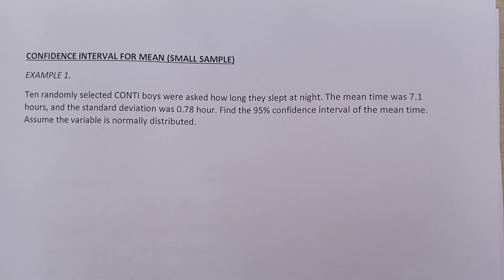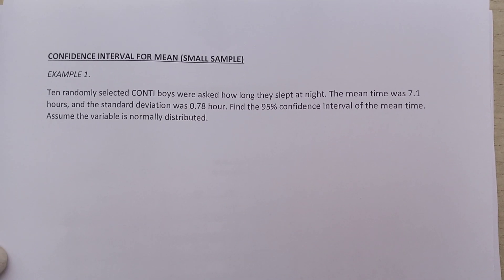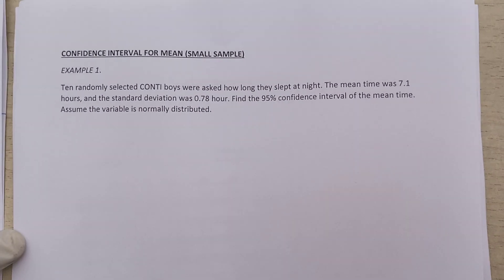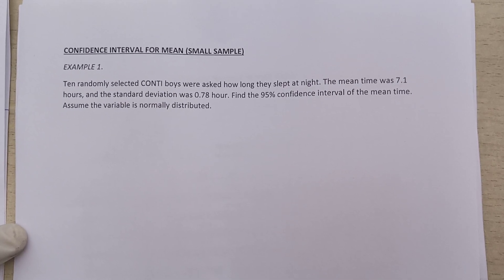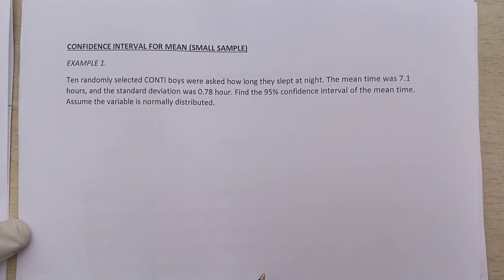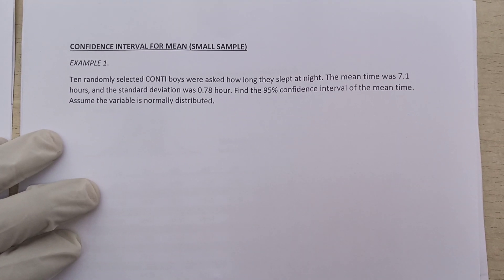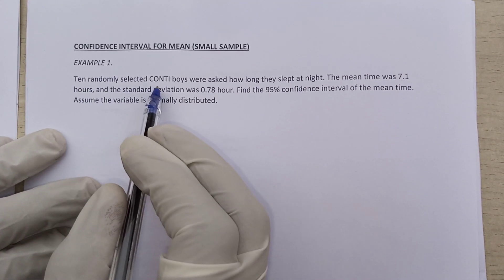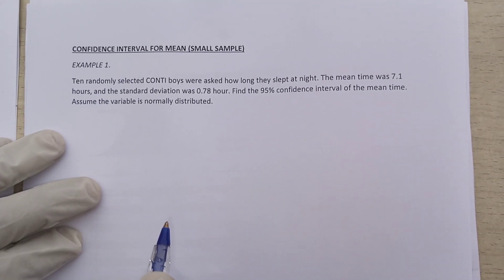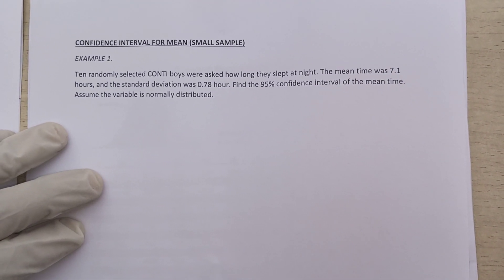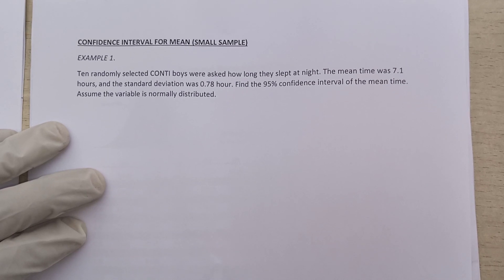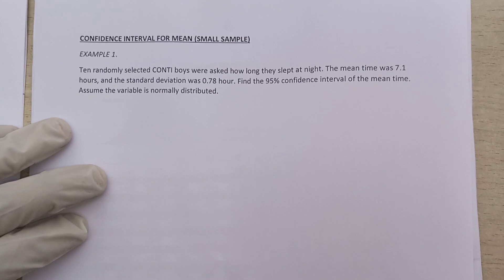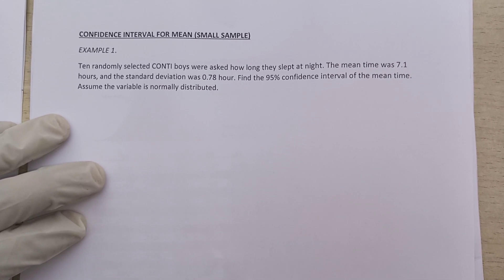To know if something is a small sample, it must meet three conditions. Number one, the variable should be normally distributed. Number two, the sample size should be less than 30. When you look at this question, they said 10 randomly selected, so 10 is less than 30 — the second condition has been met. The third condition is that the standard deviation should be a sample standard deviation, not a population standard deviation.